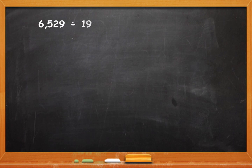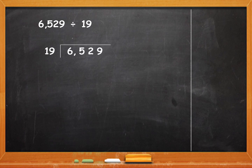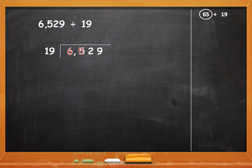Let's do another example: 6,529 divided by 19. 19 is greater than 15, so you might not know the tables. We will draw the rough column first, then arrange the dividend and divisor. Start with 6 — not possible. So we take 6 and 5. 65 divided by 19. Round off 65 to 70. And 19 is closer to 20, so 19 will be rounded off to 20. 70 divided by 20 — cancel the zeros and 2 will go 3 times in 7. Which means 19 will go 3 times in 65.